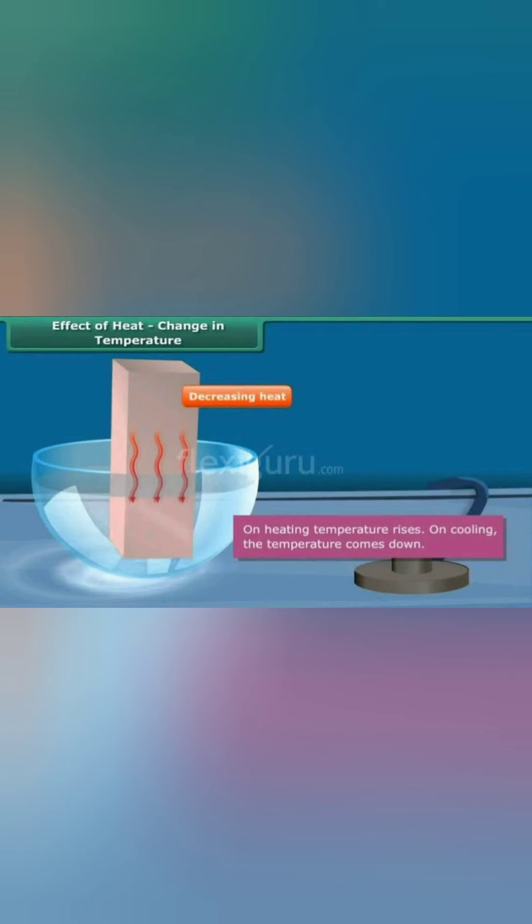Let us study these effects in detail. First, rise in temperature. When heat is supplied to an object its temperature rises. Different materials require different amounts of heat for a rise in temperature of 1 degree Celsius. Conversely, when an object gives out heat to the surroundings its temperature decreases.